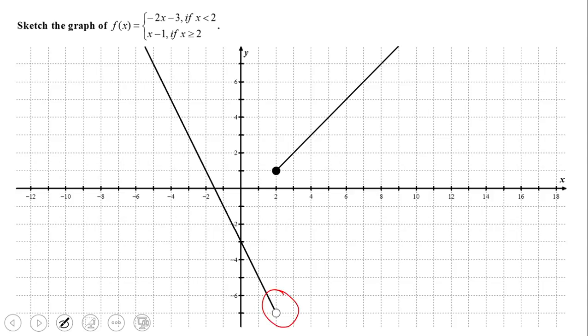Why we have an empty circle? Because we have x less than 2. And a full dot here or a full circle because we have x greater than or equal to. Other than that, the graphs on the left side go with the top, so this guy goes with this.